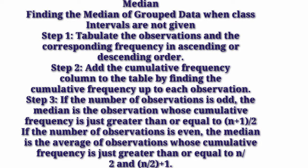Second step: add the cumulative frequency column to the table by finding the cumulative frequency up to each observation. Third step: if the number of observations is odd, the median is the observation whose cumulative frequency is just greater than n plus 1 by 2. If the number of observations is even, then the median is the average of the observations whose cumulative frequency is just greater than or equal to n by 2 and n by 2 plus 1 — that is, the average of the (n/2)th and (n/2 + 1)th observations.